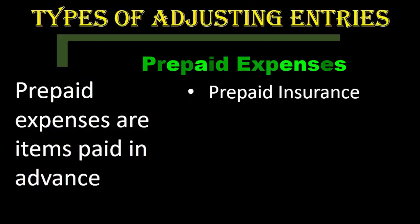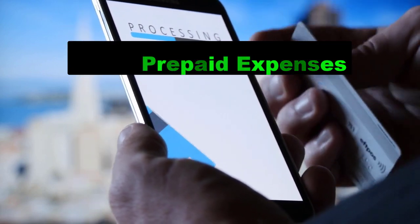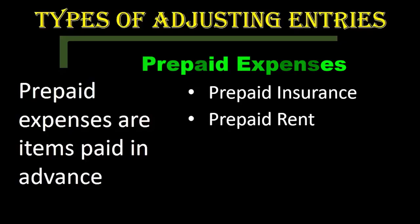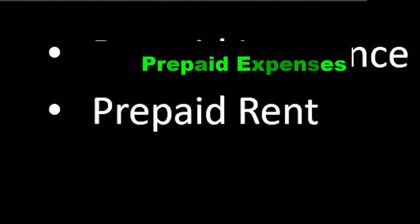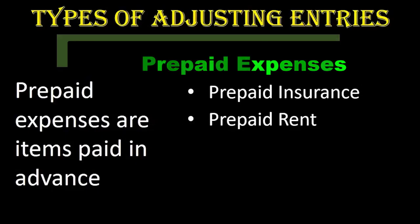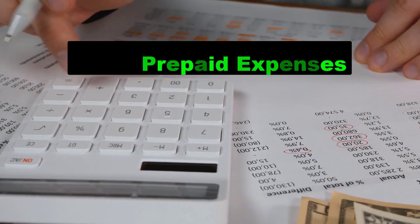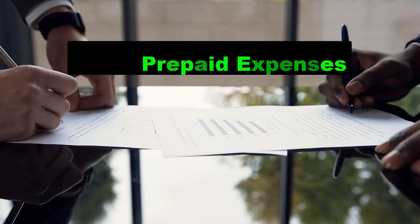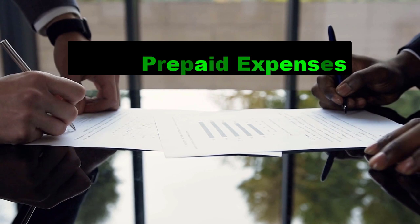Other types of prepayment could be anything we pay for in advance that will eventually become an expense. A common one in textbooks is prepaid rent, because we might set up an arrangement to pay for multiple months before we actually consume the use of a rental property. You can consider this happening with anything — even a utility bill or any other expense. If we pay for it before consuming it, it would be an asset.